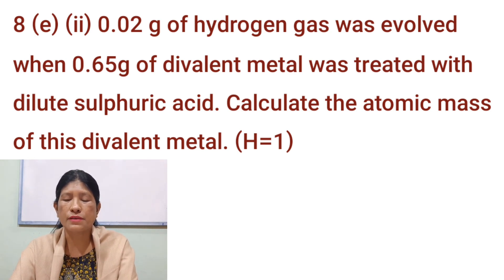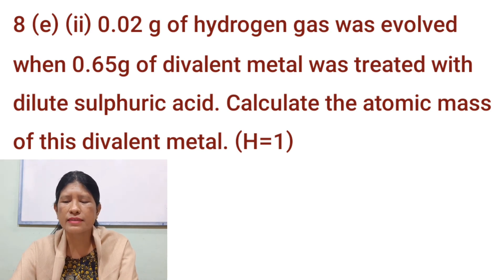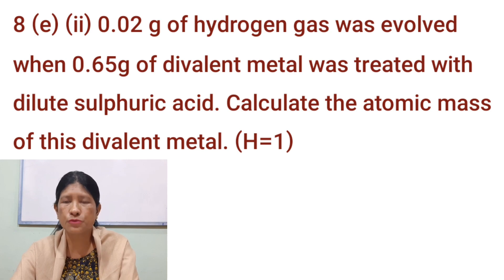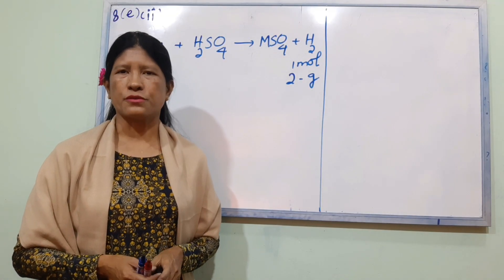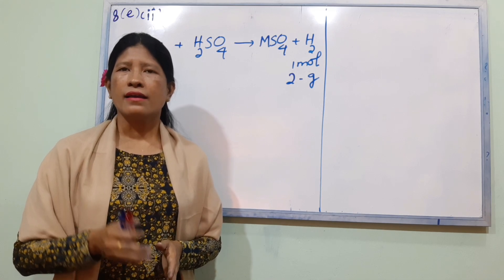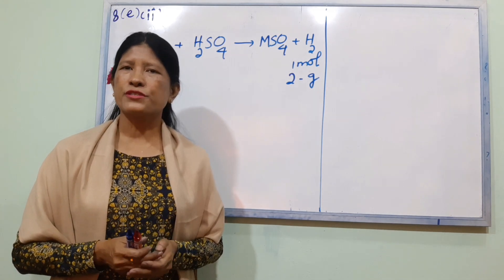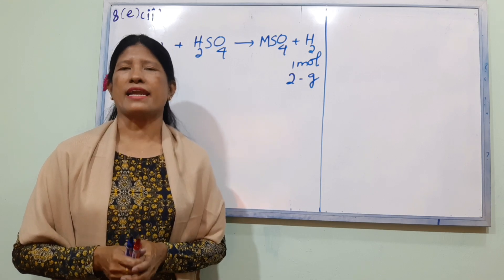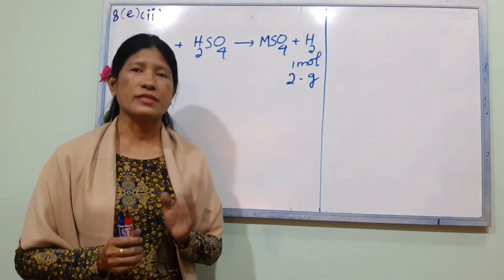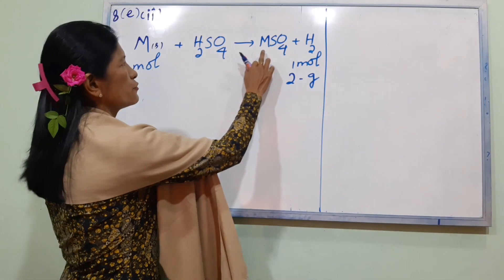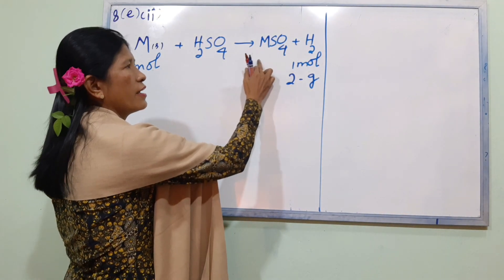New problem: 0.002 grams of hydrogen gas was evolved when 0.065 grams of a divalent metal was treated with dilute sulfuric acid. Calculate the atomic mass of this divalent metal. The equation is: M + H₂SO₄ → MSO₄ + H₂. The metal M has valence 2, giving the salt MSO₄.